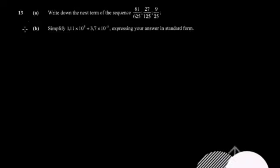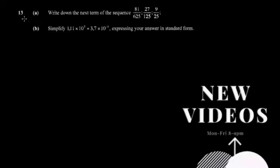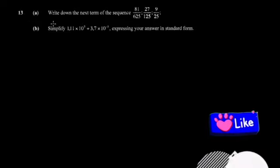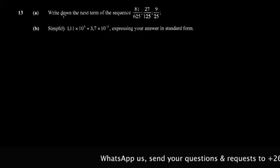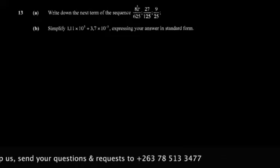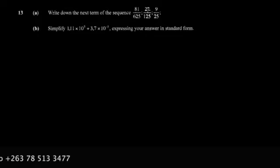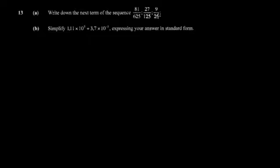Hey guys, let's continue with our 2014 paper, November paper one for ZIMSEC. Question 13a says write down the next term in the sequence: 81/625, then 27/125, followed by 9/25. These questions are no longer popular in ZIMSEC, but the reasoning is just as much about the maths you're studying now. You're supposed to investigate what's really happening to the terms.